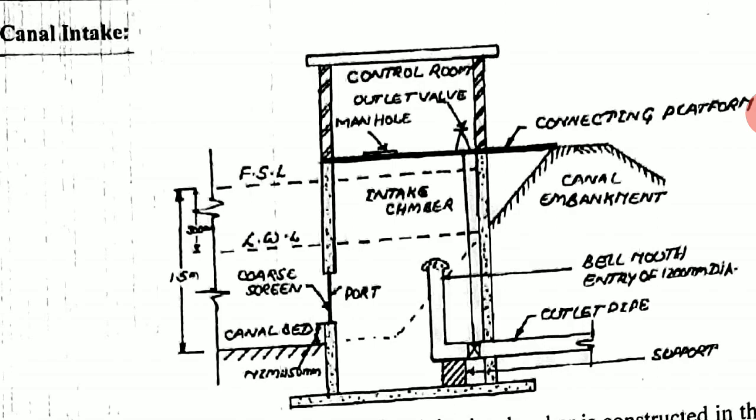In this figure, you can see the right side is the canal embankment and the left side bottom is the canal bed. The cross-section of the canal shape is shown here. From the canal embankment, a connecting platform is provided which helps watermen to move easily from the embankment to the intake well. The watermen operate the valves to control water entering inside and releasing water outside from the intake chamber.